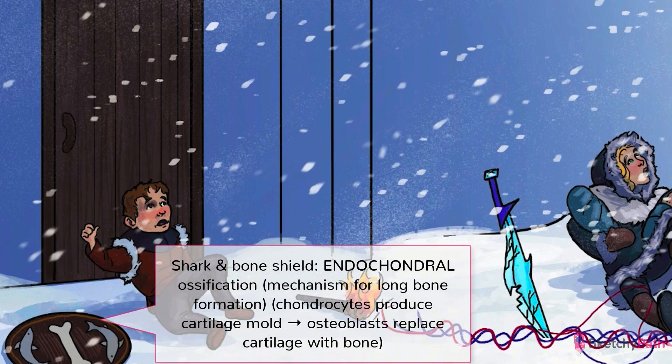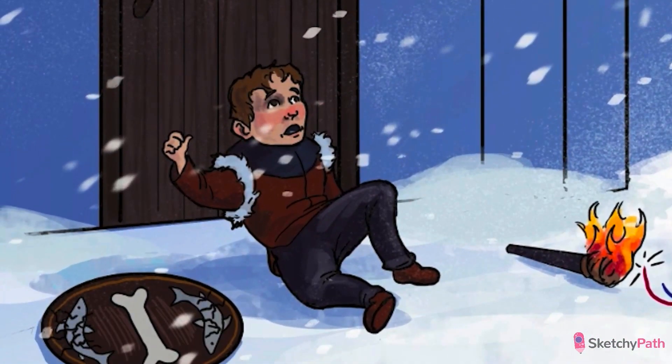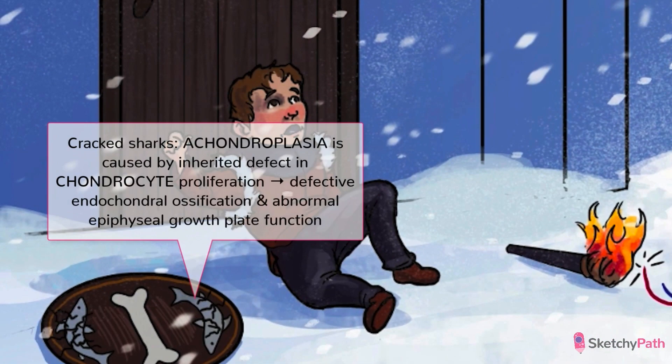The shield depicts a bone surrounded by cartilaginous sharks. Long bones, such as the humerus and femur, are formed in this manner, with the process continuing throughout childhood at the epiphyseal growth plates. Think of the shield as a growth plate, if you will. Achondroplasia is an inherited defect in the proliferation of chondrocytes, the cells responsible for producing that initial cartilage mold.